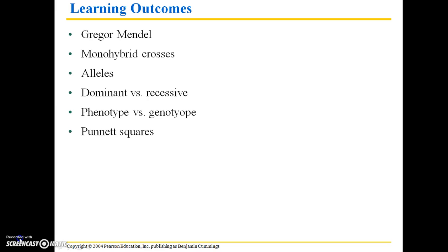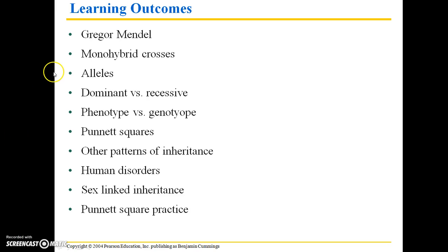Our learning outcomes for this chapter: we're going to be covering Gregor Mendel, monohybrid crosses, alleles, dominant versus recessive genetics, phenotype versus genotype, Punnett squares, other patterns of inheritance, human disorders, sex-linked inheritance, and then we're going to do some Punnett square practice.